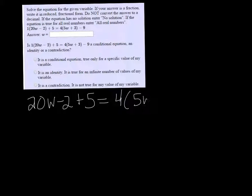Let's see what happens with this one. We have 1 times 20w minus 2. Well, that distributing with 1, it doesn't affect anything, so I'm just going to write it as 20w minus 2 plus 5 equals 4 parentheses 5w plus 3 minus 9.